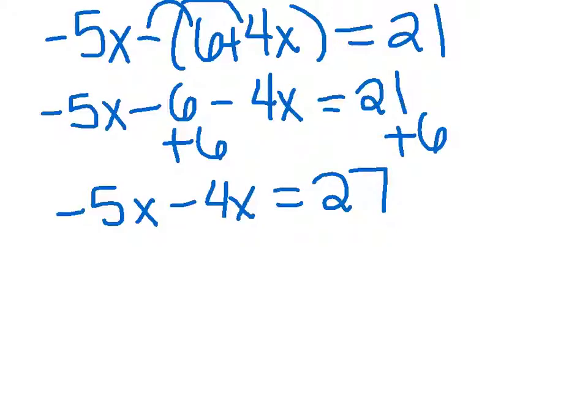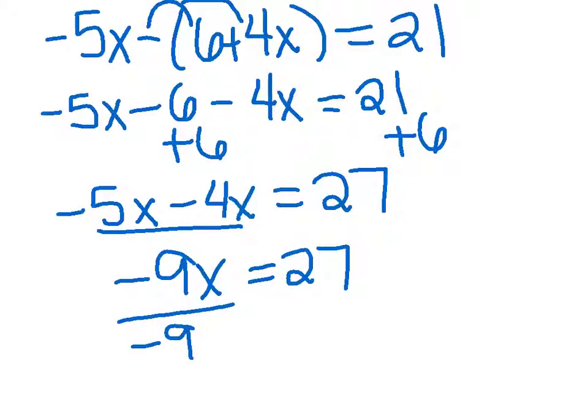The last step let's combine our x's. When we combine our x's, negative 5x minus 4x will give us negative 9x equals 27. The last step to isolate our variable x would be to divide both sides by negative 9. Our negative 9's divide to 1 and we are left with x equals 27 divided by negative 9 which gives us negative 3.